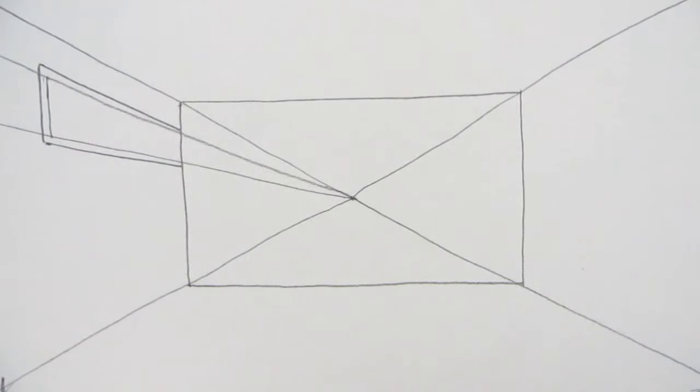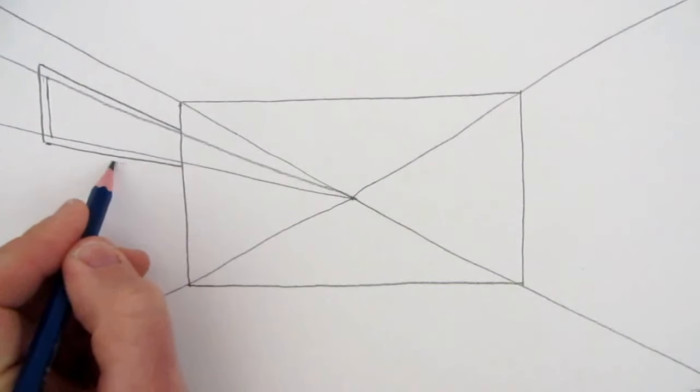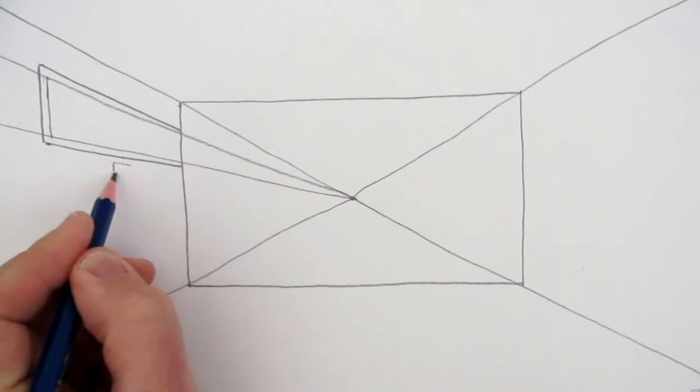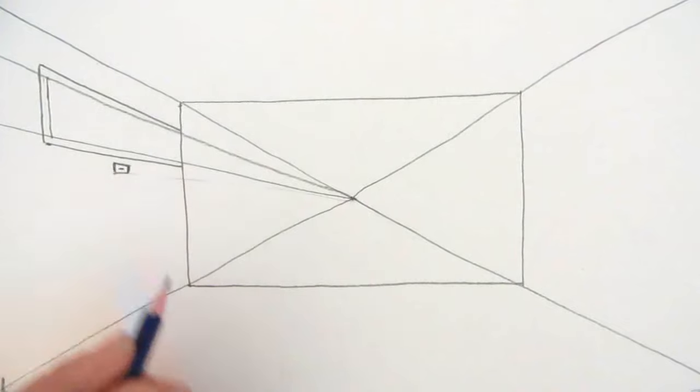Next I'll draw a little light switch on the side. And again, the lines that go downwards towards the floor and towards the vanishing point will get closer as they get further away from the edge of the paper and nearer to the center.